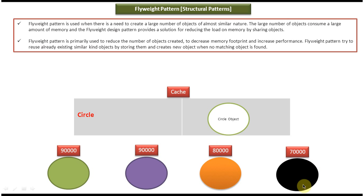If you see this, all circle objects' shape is constant — only the color is changed. So as per the Flyweight design pattern, I can improve the performance by creating the circle object only one time. I have already created it and put it in the hash, and I can reuse this circle object many times to create different colors.